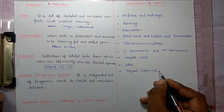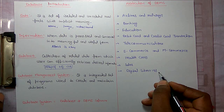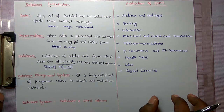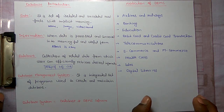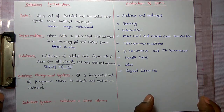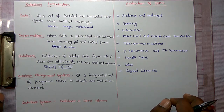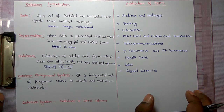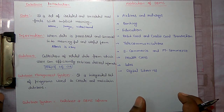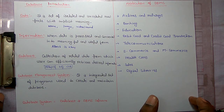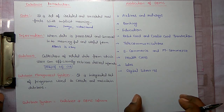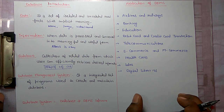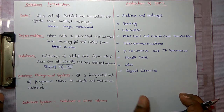If you have a digital library in colleges, you can search on any computer to find which rack to use. If you have an e-book, you can access it. So those are the digital libraries — another application of DBMS.